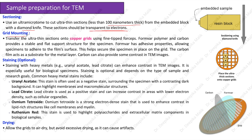Grid mounting: transfer the ultra-thin sections onto copper grids using fine-tipped forceps. Formvar, polymer, and carbon provide a stable and flat support structure for the specimen, as seen in the diagram. Formvar has adhesive properties allowing specimens to adhere to the film's surface, helping secure the specimen in place on the grid. The carbon film acts as a substrate for the metal layer and can also provide some contrast in TEM images.